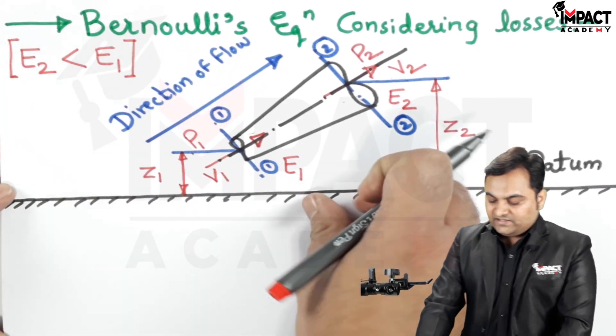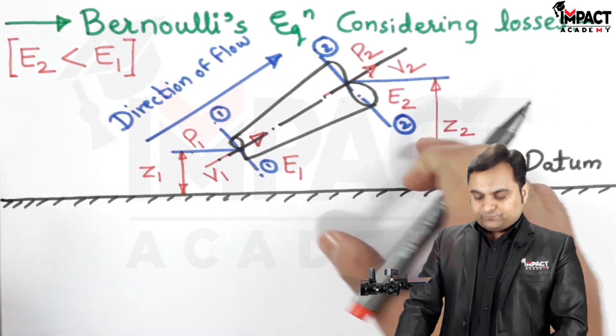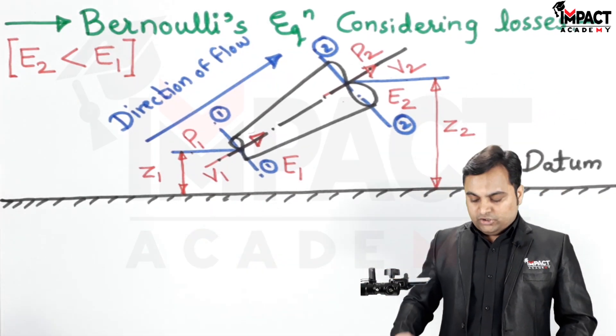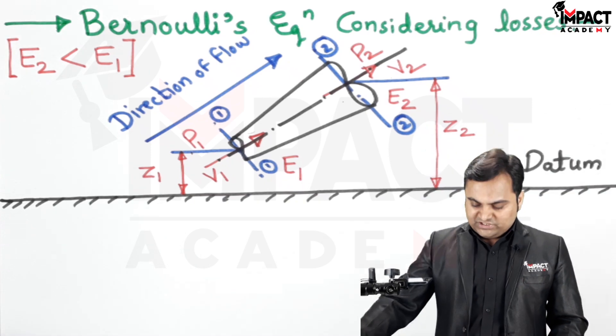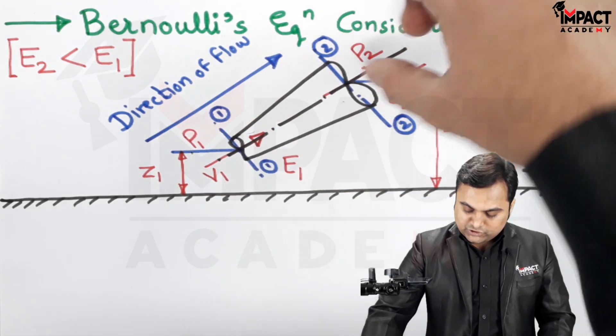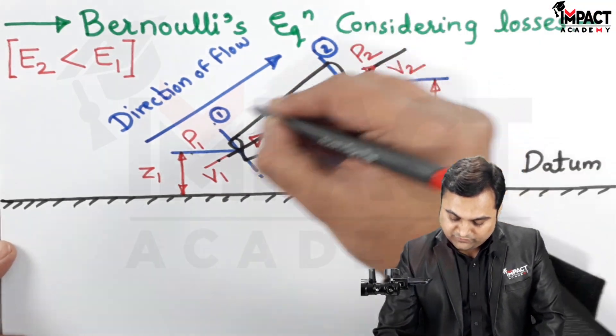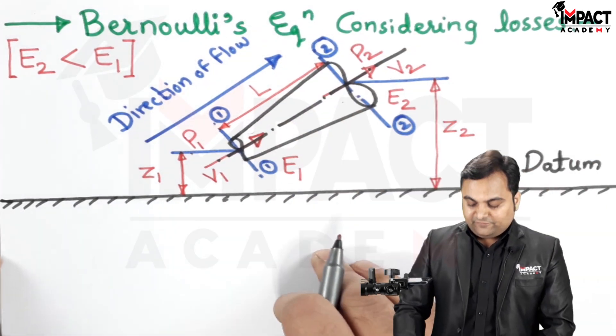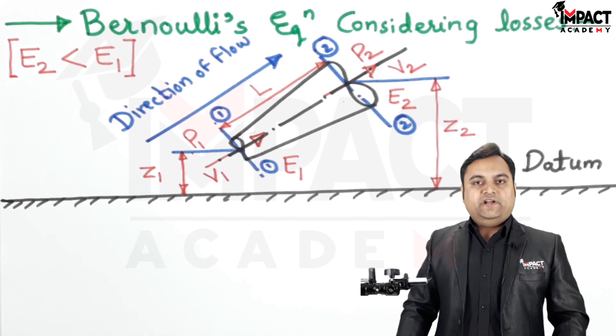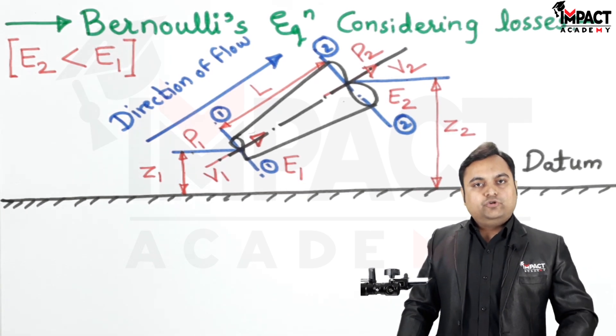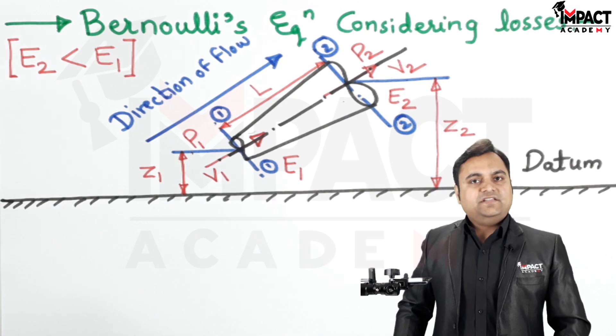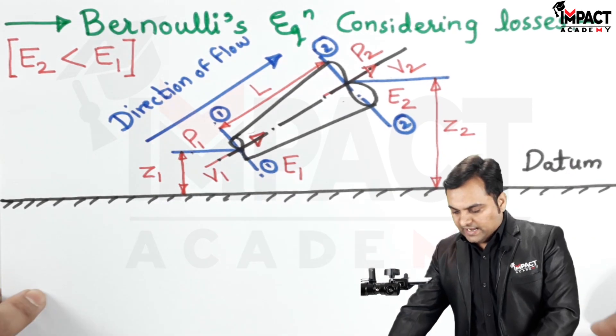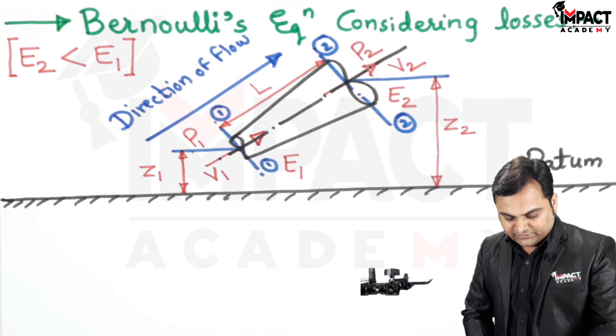Now why this value reduces? The major factor for that are the losses due to friction which is there when the fluid flows over the length of this pipe. So when it flows over the length of this pipe, there will be loss of head which is called as the head loss due to friction, considering it as the major loss. So here I am writing the Bernoulli's equation considering the losses.